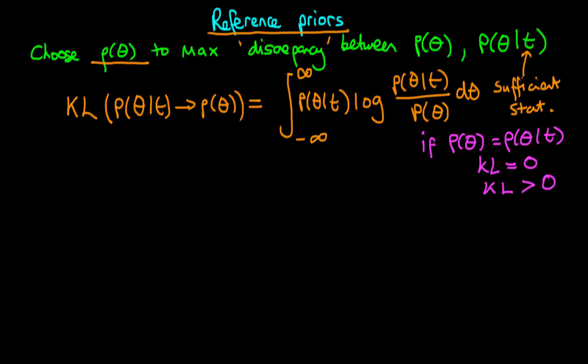But hang on — doesn't this mean that essentially what we're going to be doing is calculating a posterior and then working backwards toward our prior? That doesn't seem like the right thing to do, because essentially we're using our data to inform what our prior is.